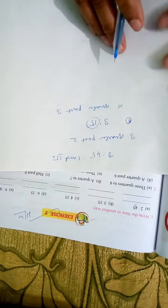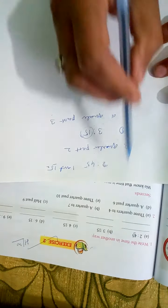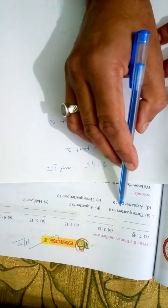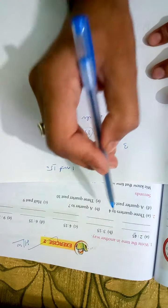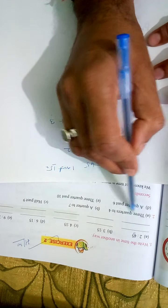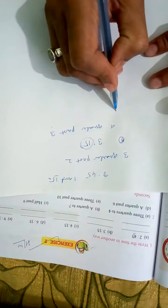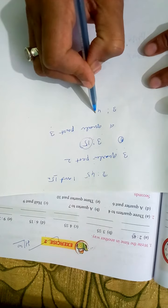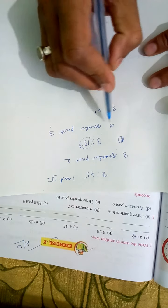And number 2, 3 quarter to 4. How to write 3 quarter to 4? That means it needs the 3 quarters to complete the 4, so it is 3 quarter to 4.